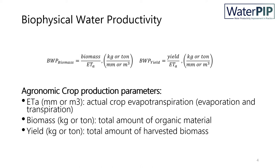Now let's look at the three parameters of biophysical water productivity which are related to agronomy: evapotranspiration, biomass, and yield. ETa, or actual evapotranspiration, consists of transpiration and evaporation. Transpiration refers to the water beneficially consumed by the crop, and evaporation refers to the water that is non-beneficially consumed.